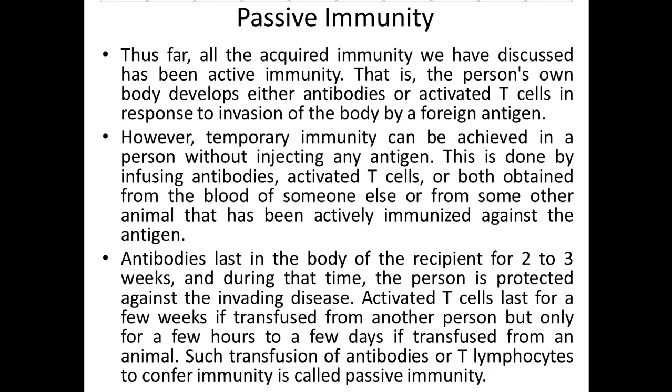Passive immunity: all acquired immunity discussed so far has been active immunity, where the person's own body develops antibodies or activated T-cells in response to invasion by a foreign antigen. However, temporary immunity can be achieved without injecting any antigen by infusing antibodies, activated T-cells, or both obtained from the blood of someone else or from an animal that has been actively immunized. Antibodies last two to three weeks; activated T-cells last a few weeks from another person but only hours to days from an animal. This is called passive immunity.